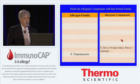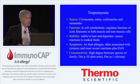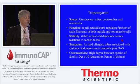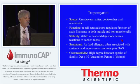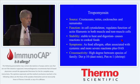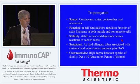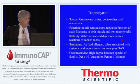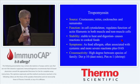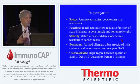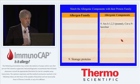Next are tropomyosins. The examples are DERP-10 in dust mite and PEN-M1 in shrimp. Crustaceans, mites, cockroaches, and nematodes all share tropomyosins that are extractable. They regulate function of the actin filaments, both in muscle and non-muscle. They're stable to heat and digestion and cause reactions in cooked foods. As a food allergen, they're often associated with systemic and more severe allergic reactions, and they have a high degree of species family cross-reactivity. So if you're allergic to dust mites and you eat shrimp, even though you have never eaten shrimp, you might have symptoms related to tropomyosin cross-reactivity.